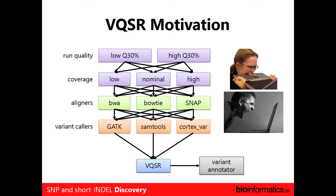The solution to that is, instead of using hard filters, one of the programs out there — also by GATK — called the Variant Quality Score Recalibrator (VQSR), is a bit of a misnomer. Basically what it tries to do is evaluate your dataset compared to other datasets. It compares it to HapMap or dbSNP and tries to adjust the filters in just the right way so that you get the results you're looking for.